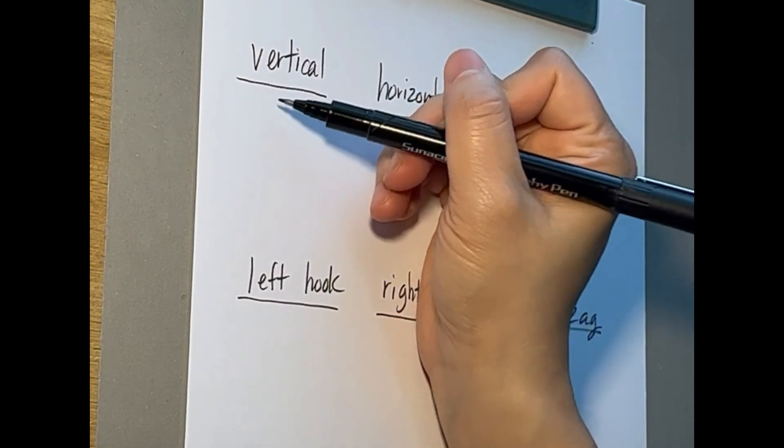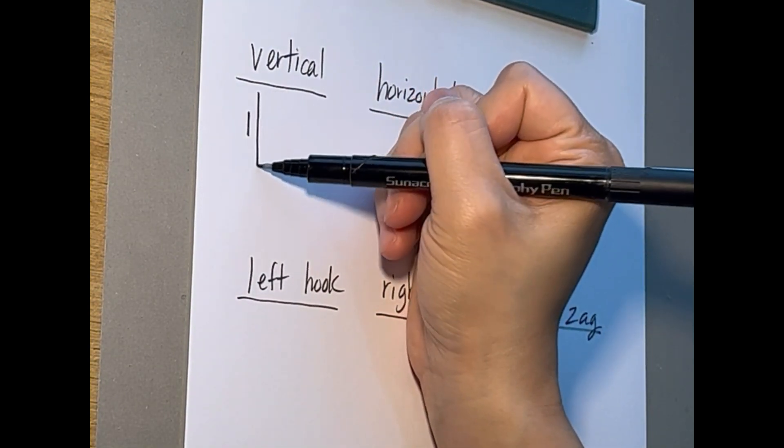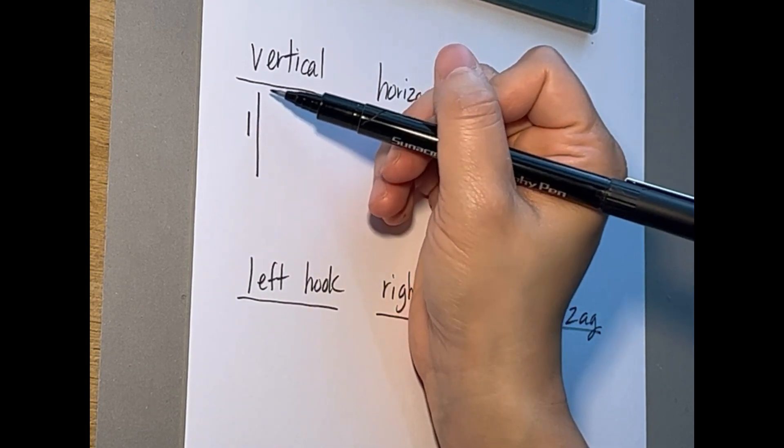So for a vertical line it can be just a short line, a long line, just like this going from top to bottom.